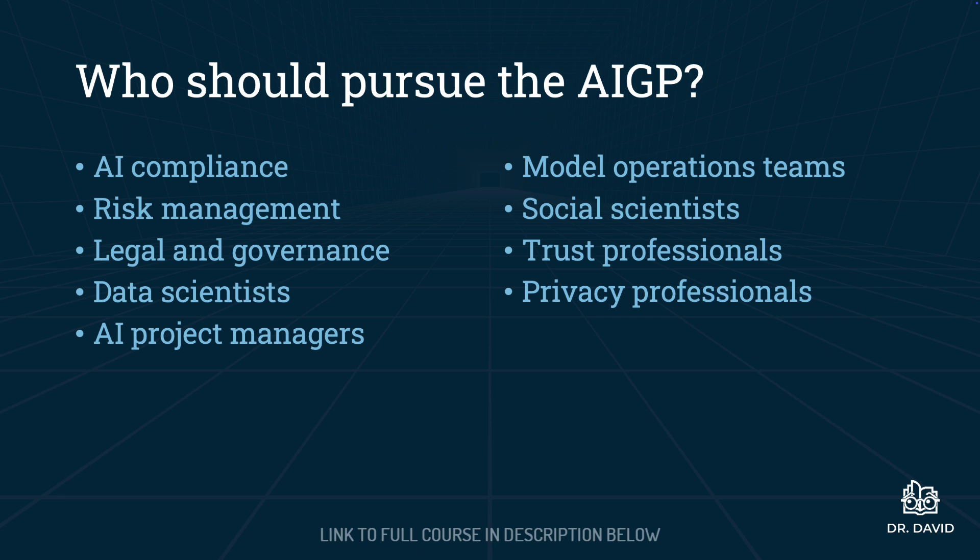Anyone whose current career or responsibilities overlap with AI should pursue the AIGP certification. Specific fields include AI compliance, risk management, legal and governance, data scientists, AI project managers, model operations teams, social scientists, trust professionals, and privacy professionals. If you don't have a background in AI, no problem — this course covers the technology, its implications for society, and how it can be appropriately managed.